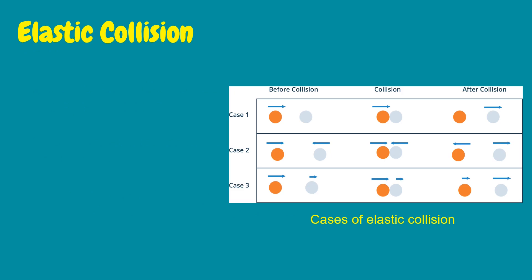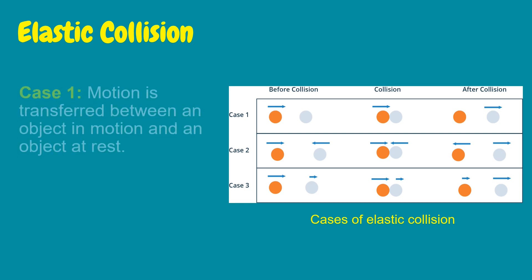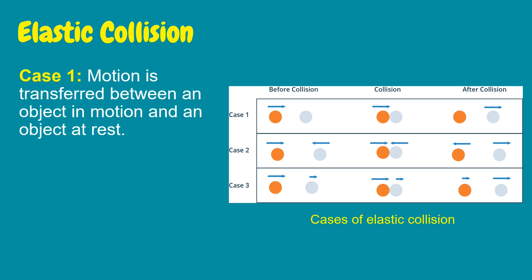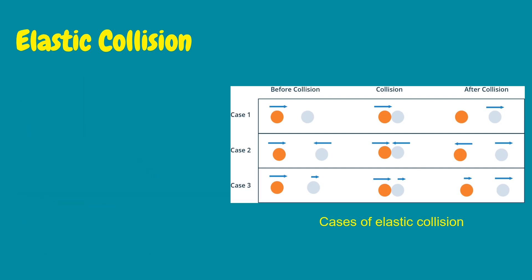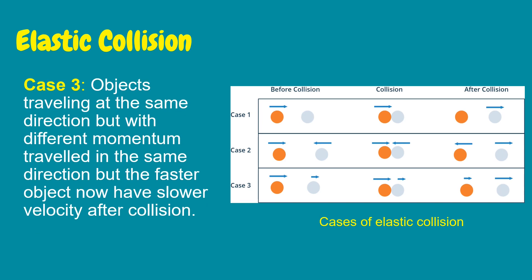There are three different cases of elastic collision. Refer to the illustration to further understand the cases. Case 1: motion is transferred between an object in motion and an object at rest. Case 2: two objects approaching head-on travel in opposite directions after collision. Case 3: objects traveling in the same direction but with different momentum — the faster object has a slower velocity after collision.